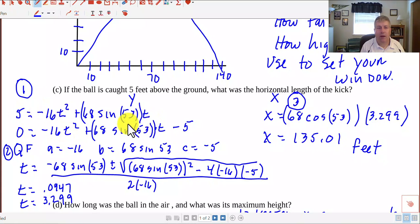So I subtract five from both sides and I've got a quadratic equation, so we have to use the quadratic formula. We substitute everything into the quadratic formula. Our a value is -16, our b value is 68 sin(53°), and our c value is -5. So I substitute all that into the quadratic formula. I did it twice on my calculator, once for the plus and once for the minus, and I get two different times.